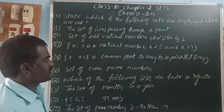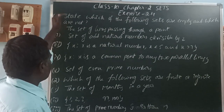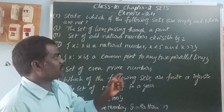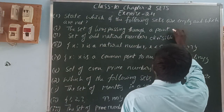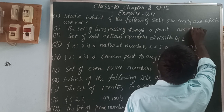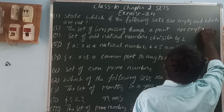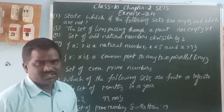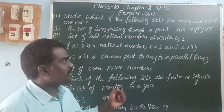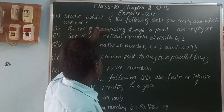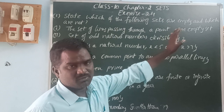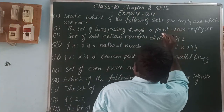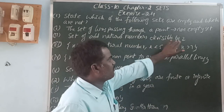The set of lines passing through a point — from a point, how many lines can you draw? Infinite lines you can draw. So it is a non-empty set. A non-empty set means a set which has more than one element. Since infinite lines can be drawn through a point, it is a non-empty set.